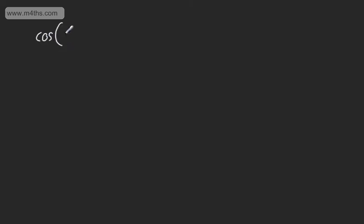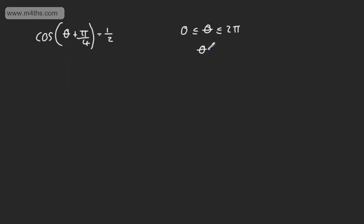Let's look at the cosine — another compound angle example. We'll take cos of theta plus pi by 4 equals one half, working in radians, with theta between 0 and 2 pi. Considering theta plus pi by 4, we can alter the interval: this goes from pi by 4 to 2 pi plus pi by 4, which is 9 pi by 4.